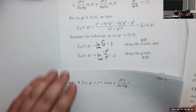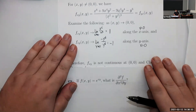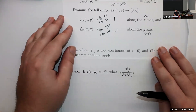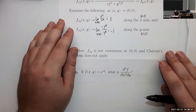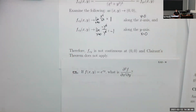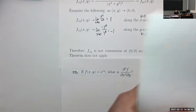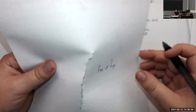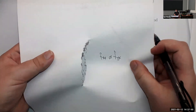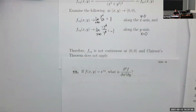If the mixed partials disagree, that means the graph of that partial derivative is not continuous. The original graph itself needs to be continuous in any case, because you can't do a derivative unless you're continuous. So no matter what, the original graph is going to be continuous.